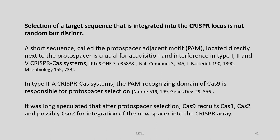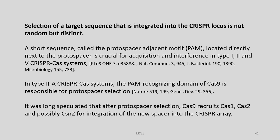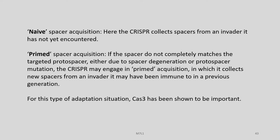The selection of a target sequence integrated into the CRISPR-Cas array is not random but distinct. A short sequence called the protospacer adjacent motif — PAM — located directly next to the protospacer is crucial for acquisition in type 1, 2, and 5 CRISPR-Cas systems. In type 2A systems, the PAM recognition domain of Cas9 is responsible for protospacer selection, and it was speculated that after protospacer selection Cas9 recruits Cas1, Cas2, and possibly CSN2 for integration of the new spacer into the CRISPR array. There are two kinds of spacer acquisition processes: naive spacer acquisition and primed spacer acquisition.